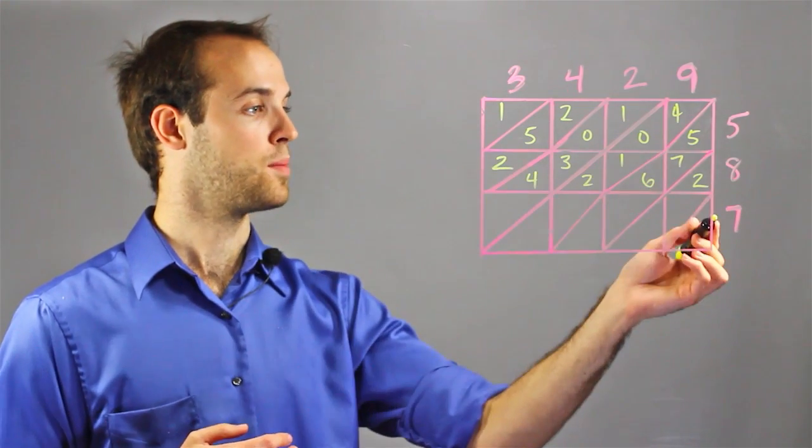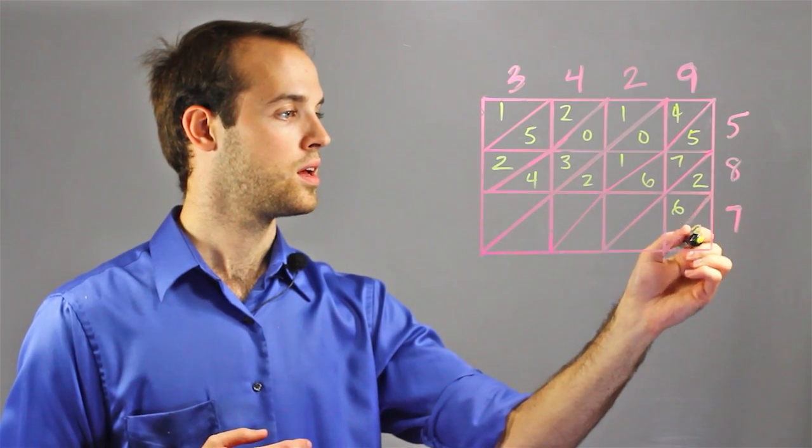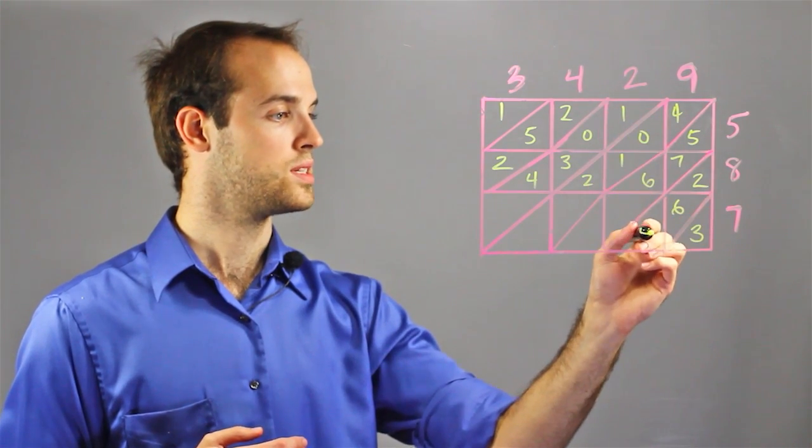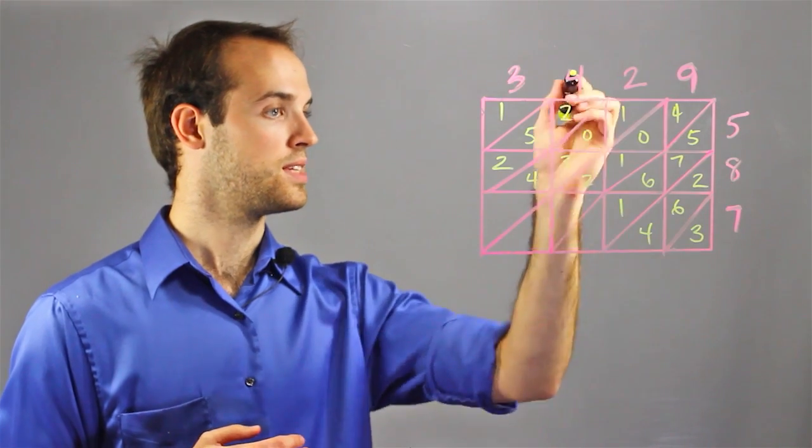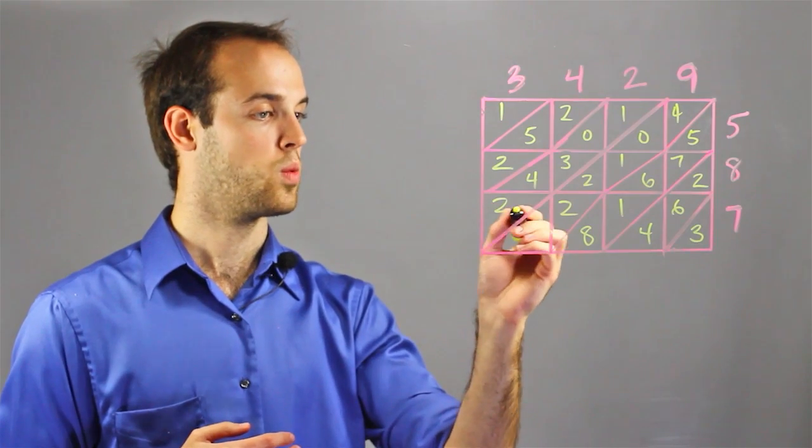And then finally my last row with the 7, 7 times 9 is 63, 7 times 2 is 14, 7 times 4 is 28, and 7 times 3 is 21.